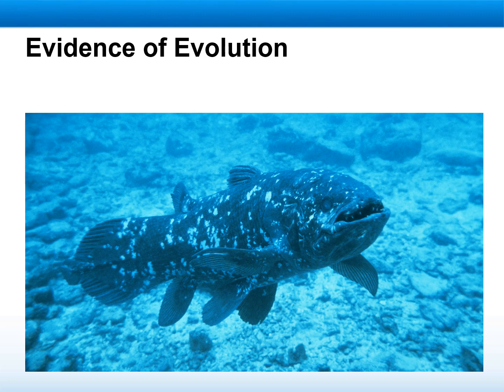One of the strengths of Darwin's theory of evolution versus Wallace's theory was that it was backed up by a lot of evidence that Darwin had collected over 20 years. This was also one of the strengths over Lamarck's theory of evolution. All three people had ideas that species change over time, but only Darwin provided convincing evidence of evolution.